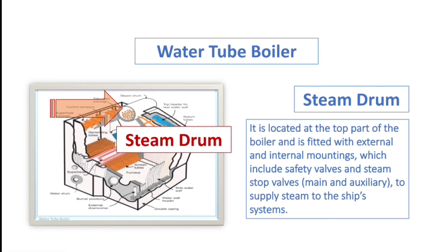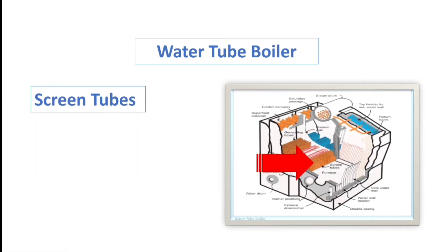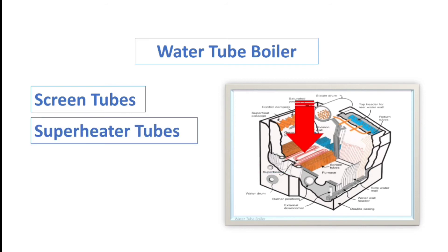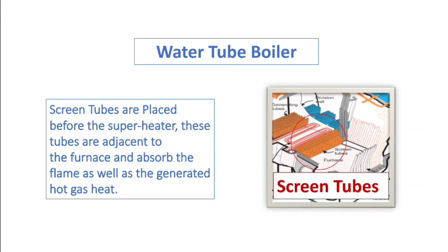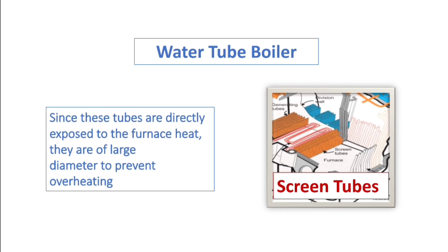The tubes are comprised of different pipes: the screen tubes, superheater tubes, generating tubes, and downcomers. The screen tubes are placed before the superheater; these tubes are adjacent to the furnace and absorb the flame as well as the generated hot gas heat. Since these tubes are directly exposed to the furnace heat, they are of large diameter to prevent overheating.